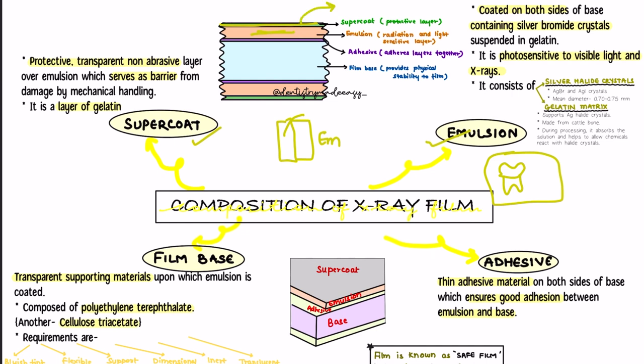The next layer is known as the emulsion. The emulsion layer is the radiation and light sensitive layer. As mentioned, there is something in the film that helps in image formation — that something is the emulsion layer.